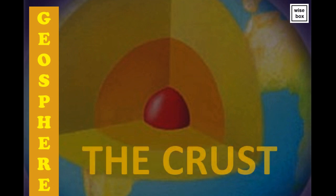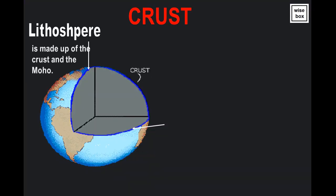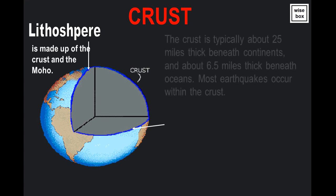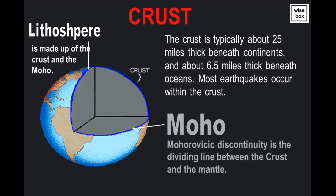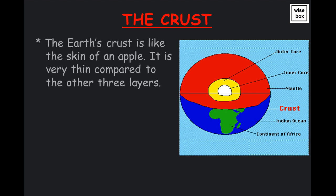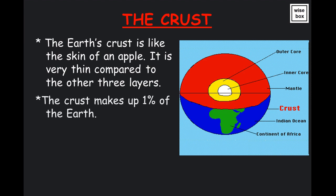The crust. The lithosphere is made up of the crust and the moho. The crust is typically about 25 miles thick beneath continents, and about 6.5 miles thick beneath oceans. The crust in this image is much smaller than in the real Earth. The Mohorovicic discontinuity is the dividing line between the crust and the mantle. The Earth's crust is like the skin of an apple — it is very thin compared to the other three layers, and makes up about 1% of the Earth.